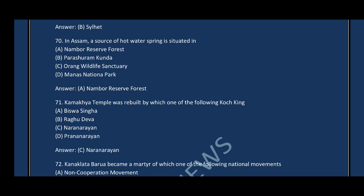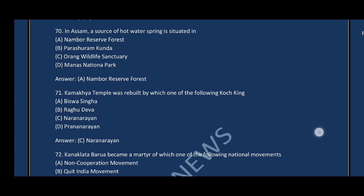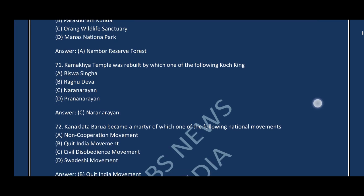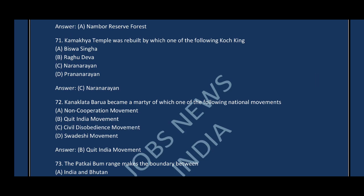Question number seventy-one: The Kamakhya temple was rebuilt by which Koch king? The correct answer is option C — Naranarayan. Question number seventy-two: Kanaklata Barua became a martyr in which national movement? The correct answer is option B — Quit India Movement.